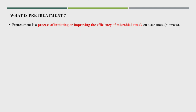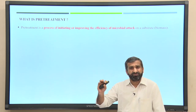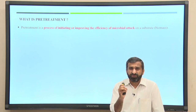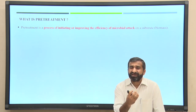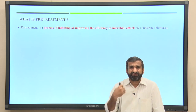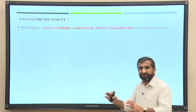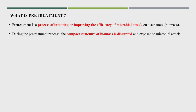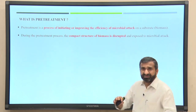What is pre-treatment? It is improving the efficiency of microbial attack on the substrate. For composting, you normally require a size of 1 to 2 centimeters, but for anaerobic digestion you require a very small size — around 2 mm to 4 mm — so the anaerobic bacteria can easily start the degradation process. During pre-treatment, the compact structure of biomass is exposed to microbial attack.